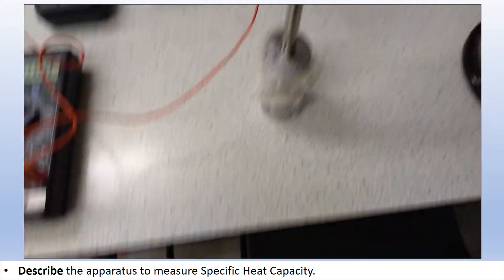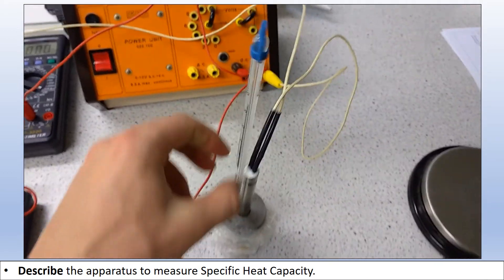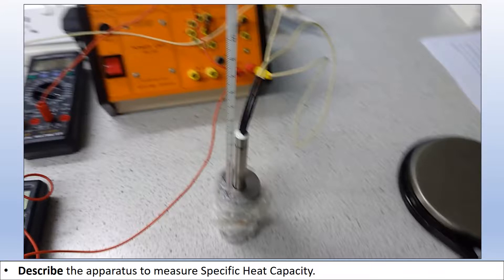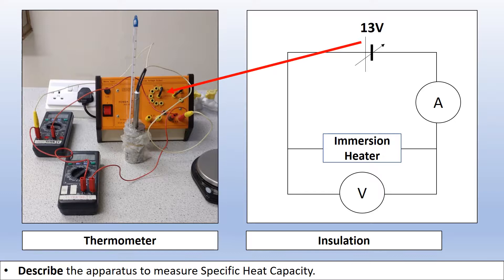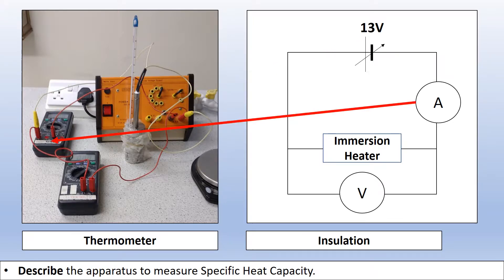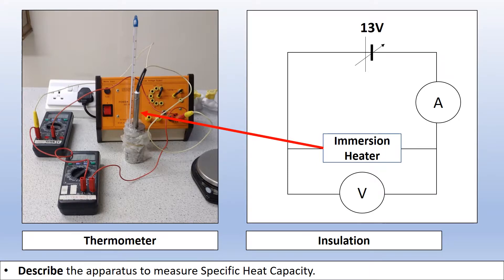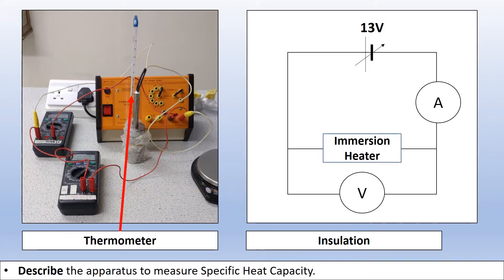We've got it set up in 10 amp mode because we're going to get big currents, and 20 volt mode because we're going to have a potential difference of about 13 volts. We put a thermometer inside the block to measure the temperature inside. In terms of writing this up as a method, we show it in the form of a circuit diagram. We've got our variable power supply on 13 volts, our ammeter in 10 amp mode, an immersion heater embedded in the block, and a voltmeter in parallel. We've insulated the block to minimize energy transfer to the surroundings.